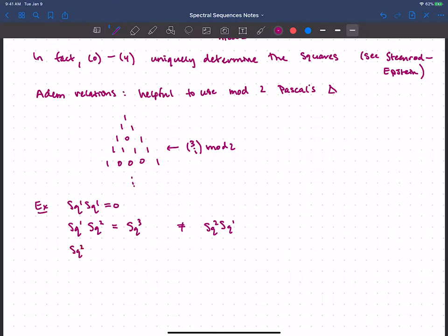You keep going. And a good one to check is that square two square two is square three after square one. And we just found out square three was square one square two. So that's square one square two square one.